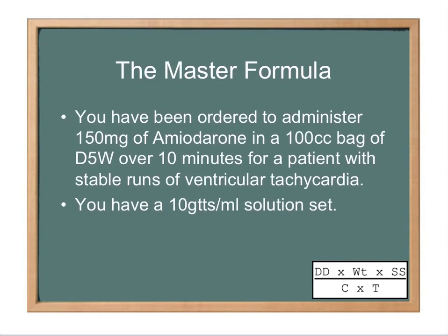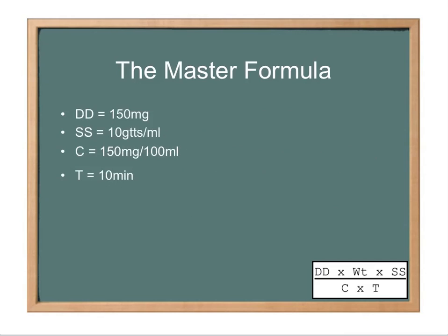Here's another one. You've been ordered to administer 150 milligrams of amiodarone in a 100 cc bag of D5W over 10 minutes for a patient with stable runs of VTAC. You have a 10 drop per milliliter solution set to use. This dose gets a lot of people when they're trying to plug it into the master formula. Your desired dose is 150 milligrams. Your solution set is 10 drops per milliliter. Your concentration is going to be 150 milligrams per 100 milliliters because that amiodarone is in a 100 ml bag. And your time component is going to be 10 minutes.